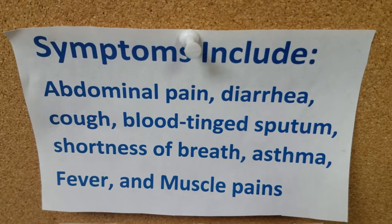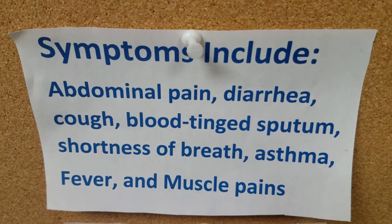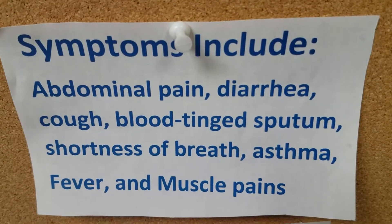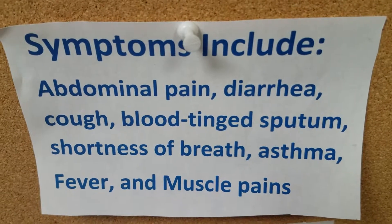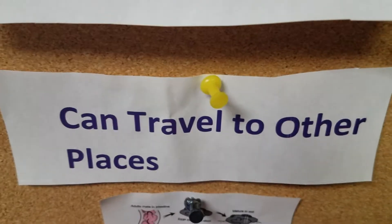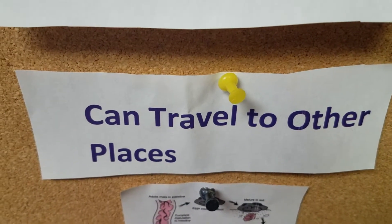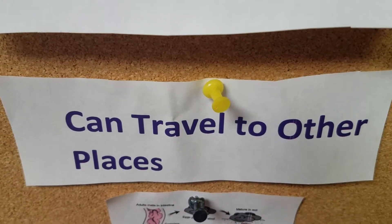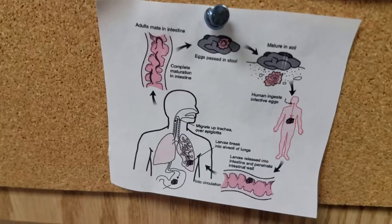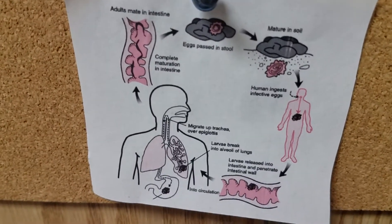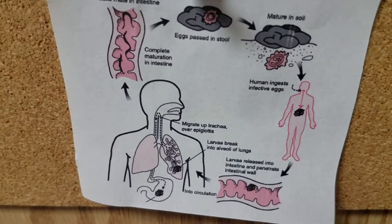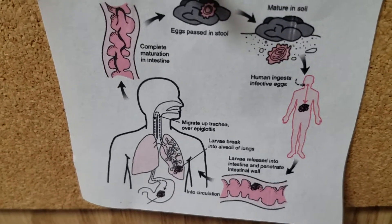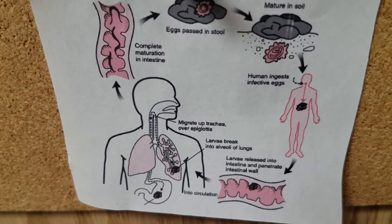Symptoms include, but are not all, abdominal pain, diarrhea, coughing, shortness of breath, asthma, fever, and muscle pain. More things can be caused when they travel to other places — roundworms can also go up to the eyes and brain, which can cause memory loss, nausea, and other effects. This diagram shows how it can go from interaction with the soil to inside a person's intestines, to the lungs, up to the esophagus, and back down into the stomach.